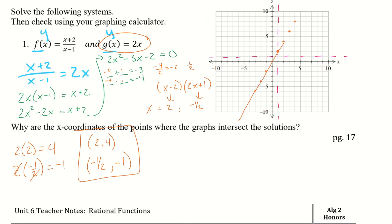There's g(x), and I know my two equations intersect at (2, 4). So going up to 4 on the graph, that part of f(x) goes through that point. And negative one-half, negative 1 is the other intersection point.